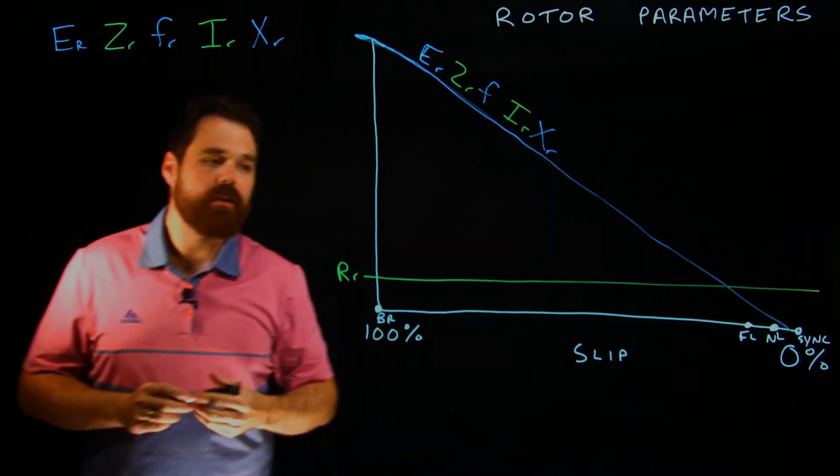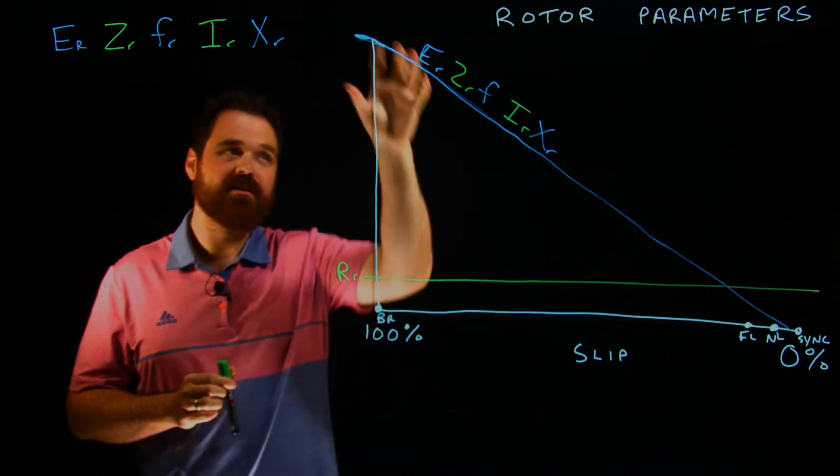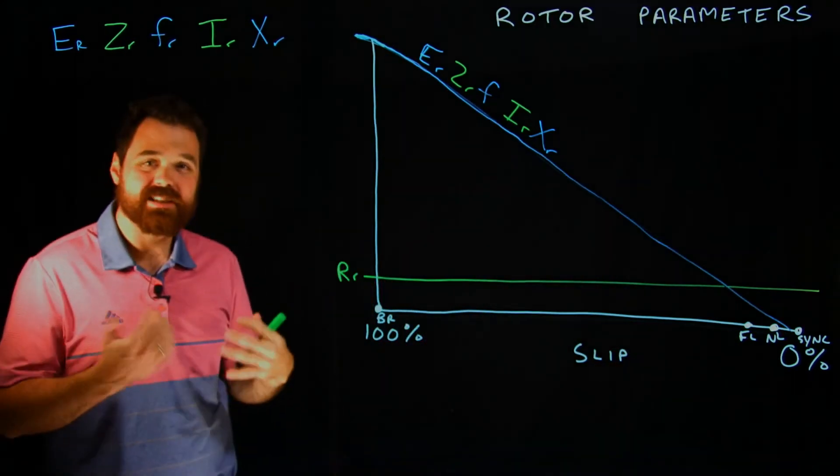So you're going to see them waver throughout the graph a little bit. So we've got voltage, impedance, frequency, current and reactance all on that downward trend as we have less slip.